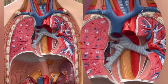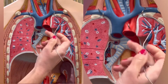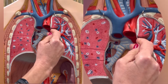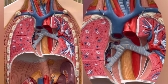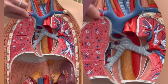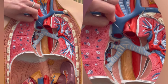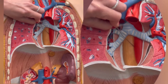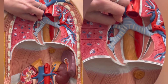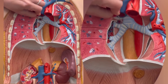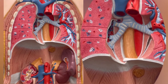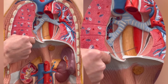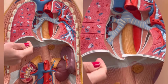Then the aorta makes a turn, and that's what we call the aortic arch. After that, the blood starts descending, and this portion of the aorta that's within the thoracic cavity is what we call the thoracic aorta.